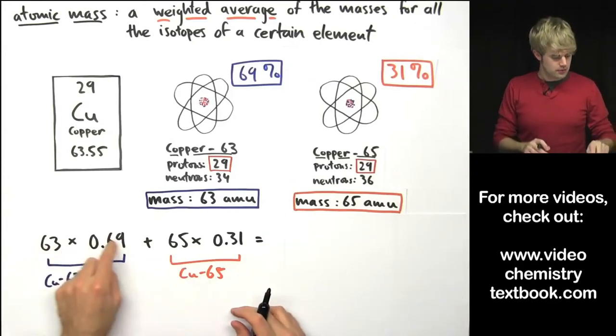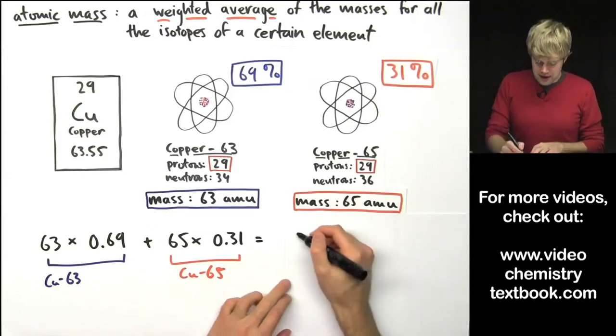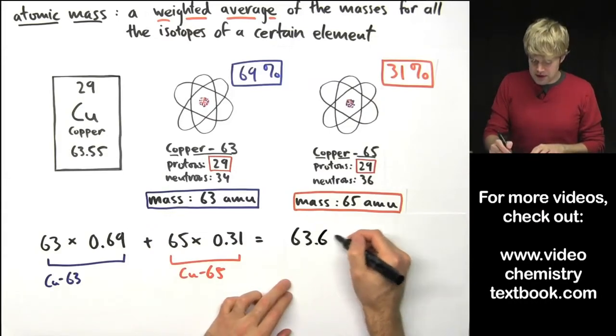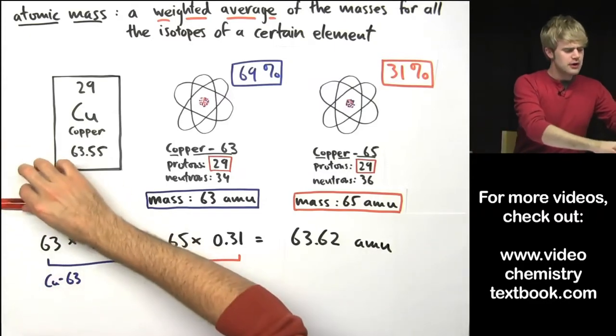It's just setting it up that's tricky. You multiply this, multiply this, add them together and I'm going to get 63.62 AMU. Now look at this...